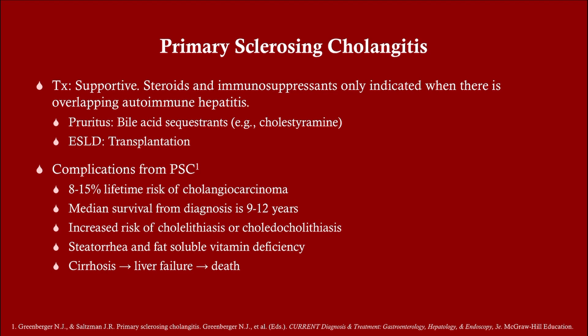For pruritus we can give bile acid sequestrants — where do we also give that? For high cholesterol. The reason is it reduces the reabsorption of bile; the liver then has to make new bile and uses cholesterol to do that, thus reducing your cholesterol. There are a number of complications from PSC, including an increased risk of cholangiocarcinoma, which I talk about in the liver section.